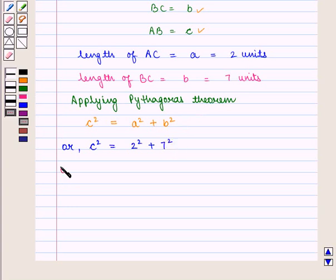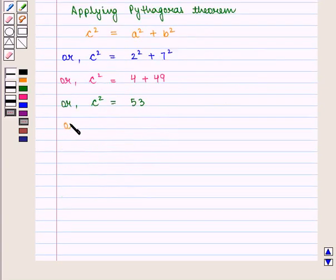So we get c² = 2², that is 4, plus 7², that is 49. That is, c² = 53. Or we can say that c = √53.